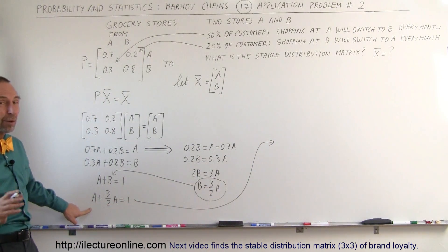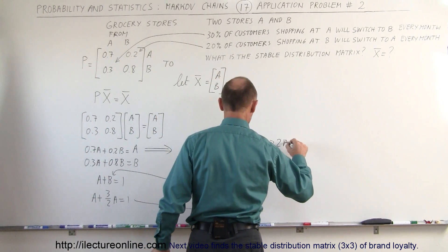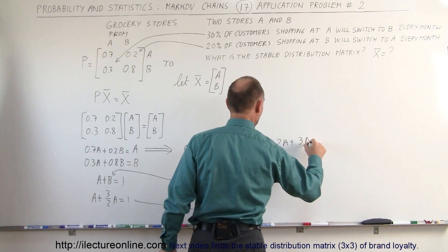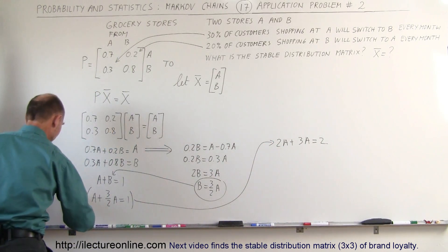We're now going to multiply both sides of the equation by 2. If I do that, I end up with 2A plus 3A equals 2. So what I did here is I multiplied both sides by 2.